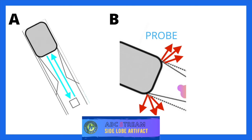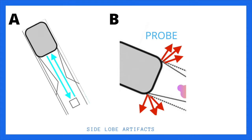The S in ABC STREAM is side lobe artifacts. Normal structures reflect back sound, but there are also low amplitude ultrasound energy beams that project radially from the main beam axis. These radially projecting beams can hit structures on either side of the main imaging field, and if those structures are highly reflective they return a signal back to the transducer. This is known as a side lobe artifact.